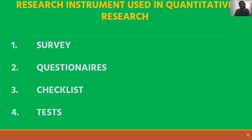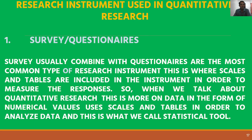The next topic is research instruments used in quantitative research: we have survey questionnaires, checklist, and test. Survey questionnaires, usually combined with scales and tables, are the most common type of research instrument. Since quantitative research focuses on data in the form of numerical values, scales and tables are used to analyze data — this is what we call a statistical tool.